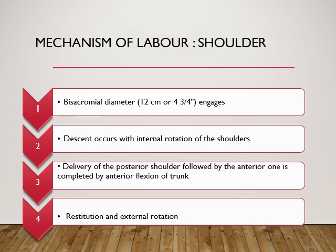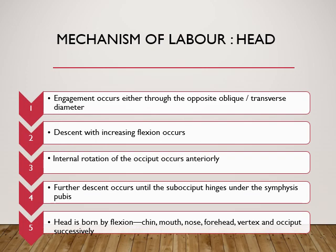Next, delivery of the shoulders: the engaging diameter is the bisacromial diameter, which is 12 centimeters — a big diameter. Descent occurs along with internal rotation of the shoulders so that it occupies the anteroposterior diameter of the pelvis. Then there is delivery of the posterior shoulder followed by the anterior one, completed by anterior flexion of the trunk followed by restitution and external rotation.